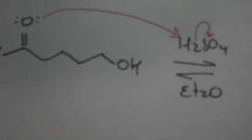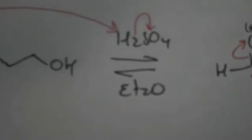And now we're going to look at a hemiacetal reaction. We have a carbonyl compound with the alcohol attached to it and we react that with sulfuric acid in Et2O.